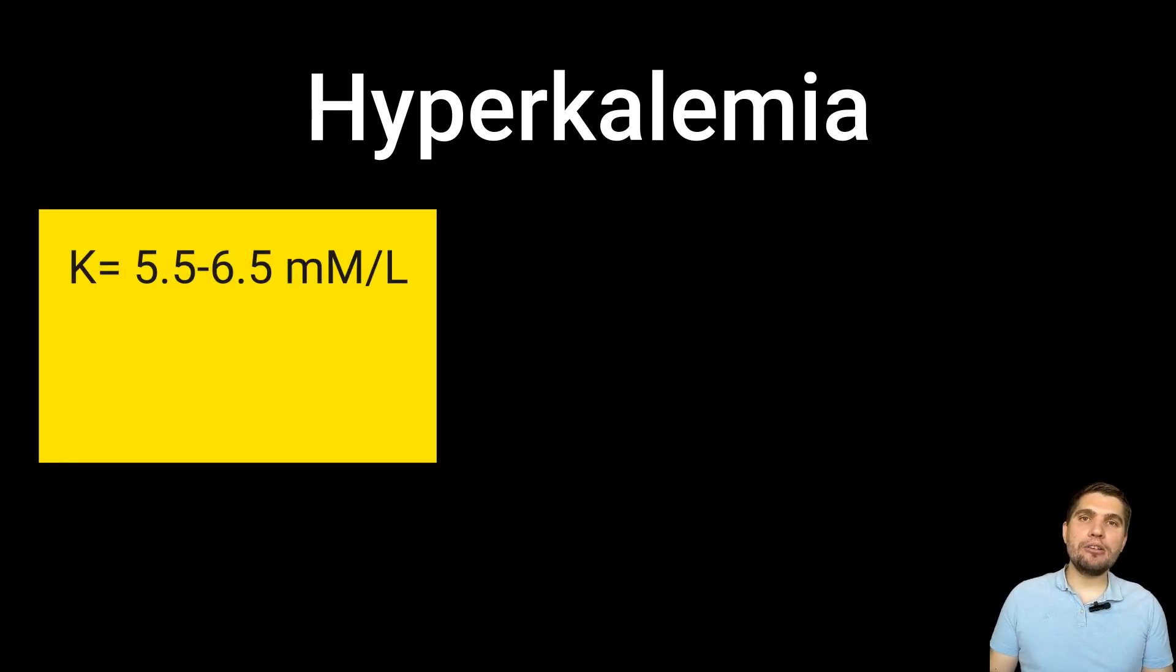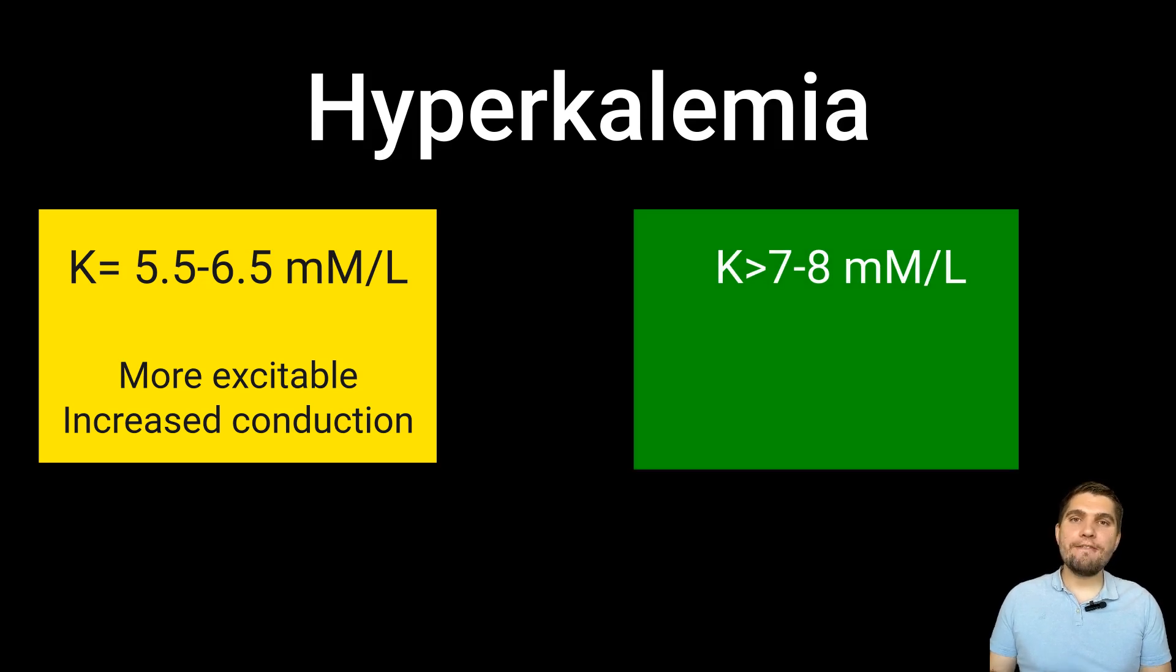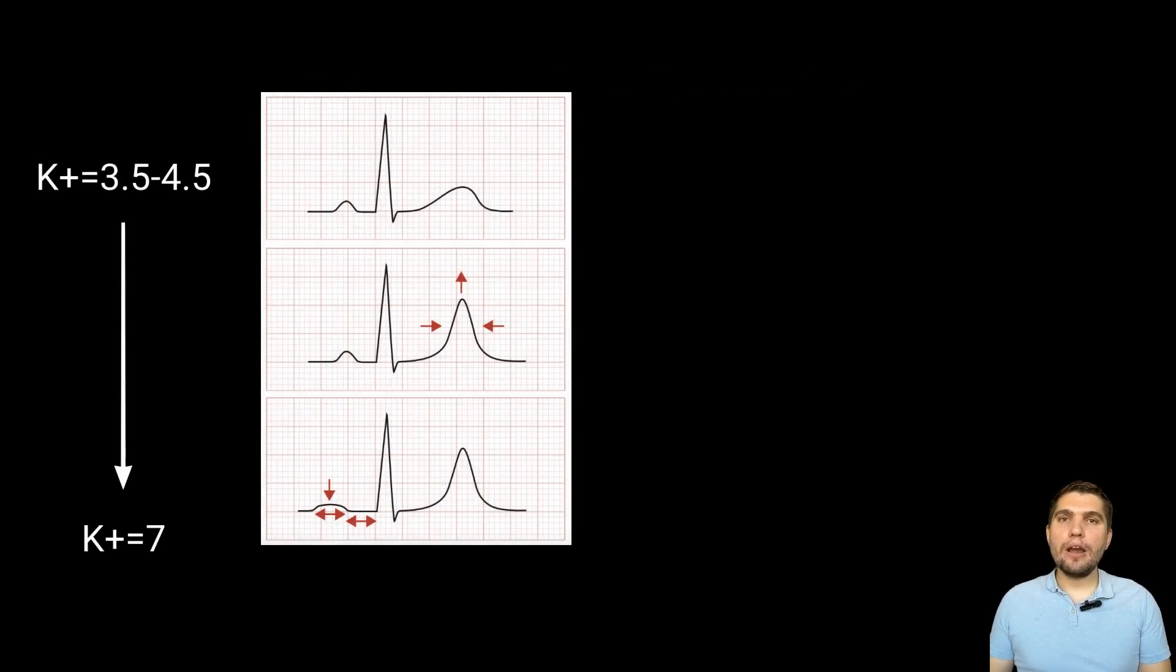So, as you can see, hyperkalemia may lead to this biphasic response, where mild to moderate elevations of serum potassium in the range of 5.5 to 6.5 millimoles per liter may initially speed up conduction slightly and lead to tachycardia instead of classic bradycardia that we expect to see in hyperkalemic patients. However, more severe hyperkalemia above 7 to 8 millimoles per liter drastically slows conduction, causing widened QRS intervals, and severe cases can produce life-threatening sine wave ECG patterns, conduction block, and cardiac arrest.